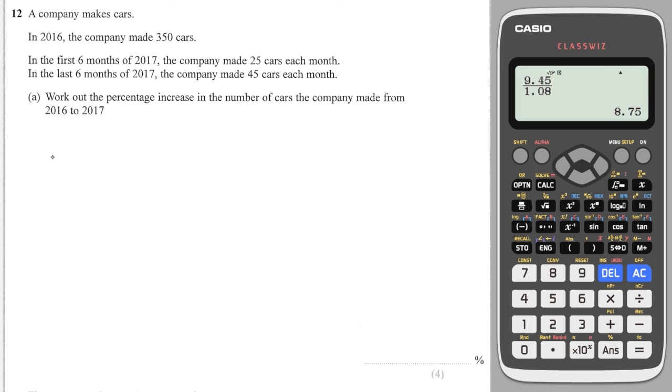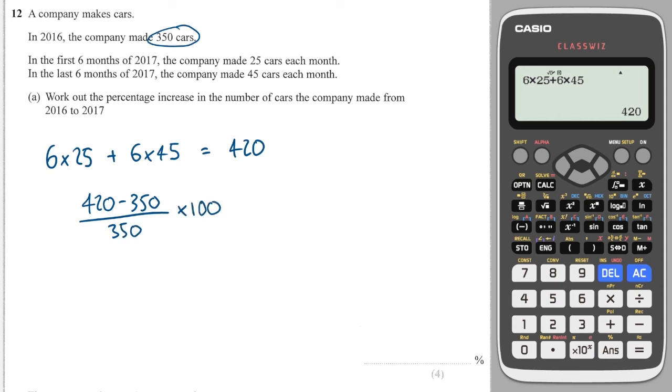So in 2017 there were six months where they made 25 and then there were six months where they made 45. So let's work out how many cars they made. So 6 times 25 plus 6 times 45 is 420, and this is how much they made the year before. So we take the difference between the two and then divide it by the original amount and then times it by 100 to get the percentage change. Fraction button first, 420 minus 350 over 350, and then times by 100, we get 20, so 20%.